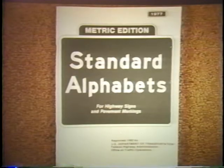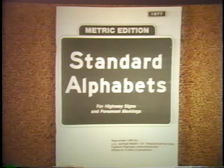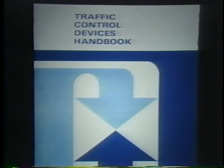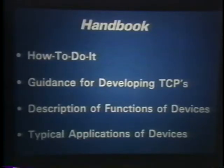These color, shape, and size standards for signs are incorporated by reference in the MUTCD. The standard alphabets contain layout for the letters and numbers that go on the signs, as well as pavement mark arrows, etc. The MUTCD has a helpful implementation guide, the Traffic Control Devices Handbook, or the TCDH. This handbook has a wealth of information on how to apply the MUTCD.